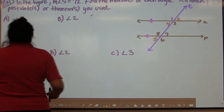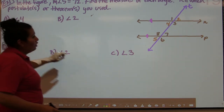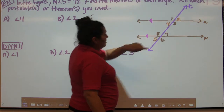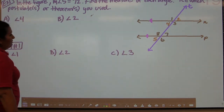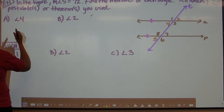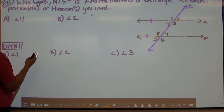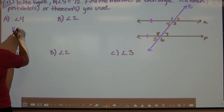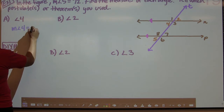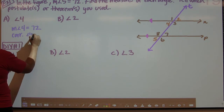We're going to start with angle 4. As we look at angle 4 and angle 5, they're corresponding angles — they're color-coded there too. Since angle 5 equals 72 and angle 4 and angle 5 are corresponding, they're congruent. So the measurement of angle 4 would also equal 72, because of the corresponding angles postulate.